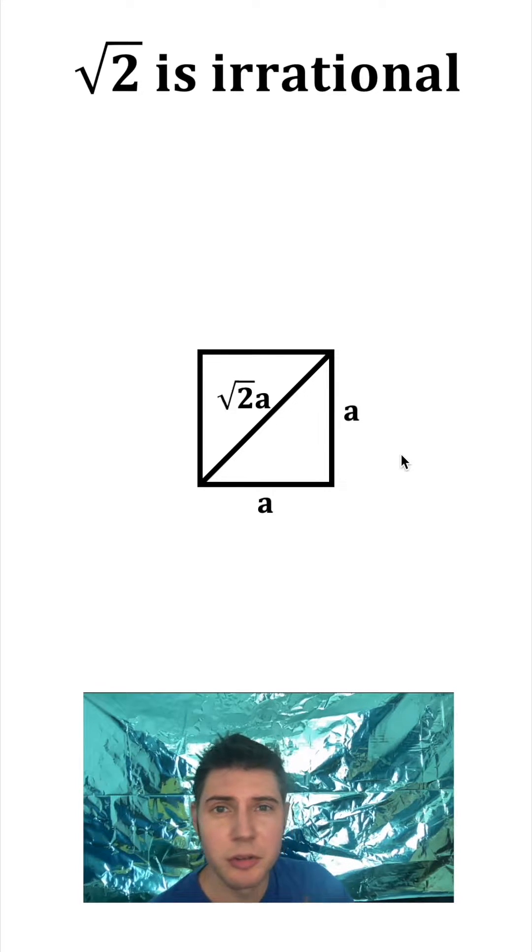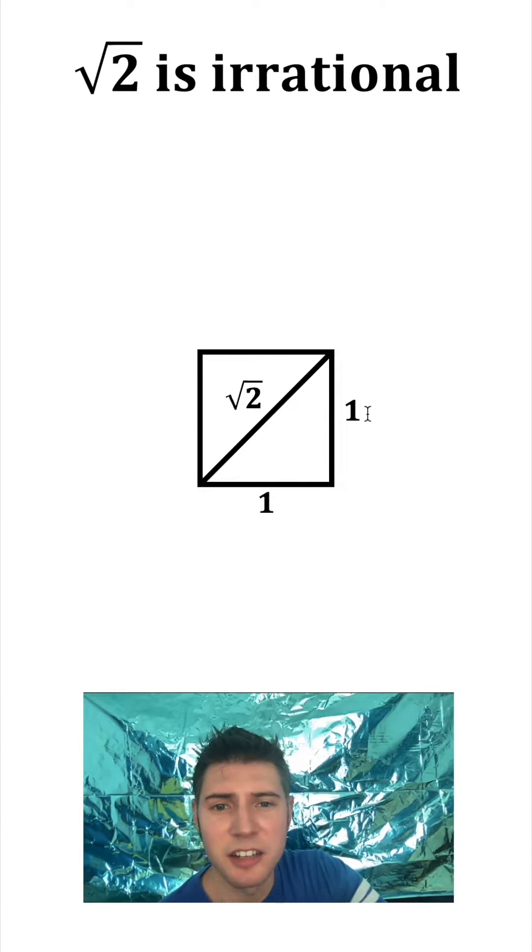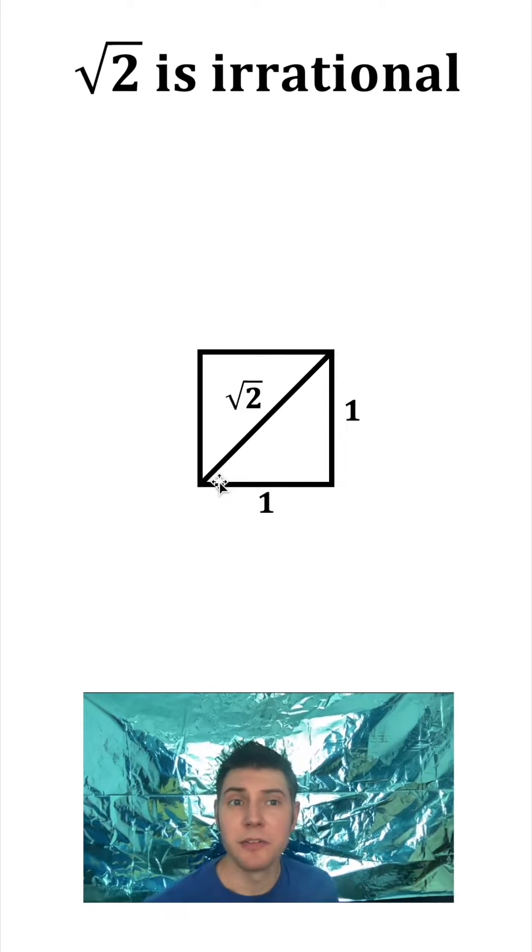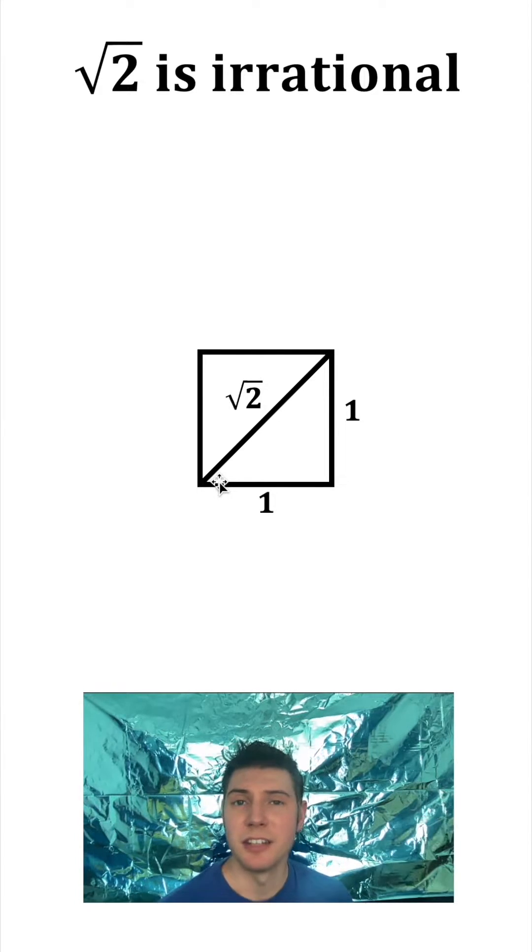Creating something that's a length of square root of 2 is not very hard. If we change the side lengths to 1, the diagonal will always be exactly square root of 2. So we can very easily produce this, but it's still irrational.